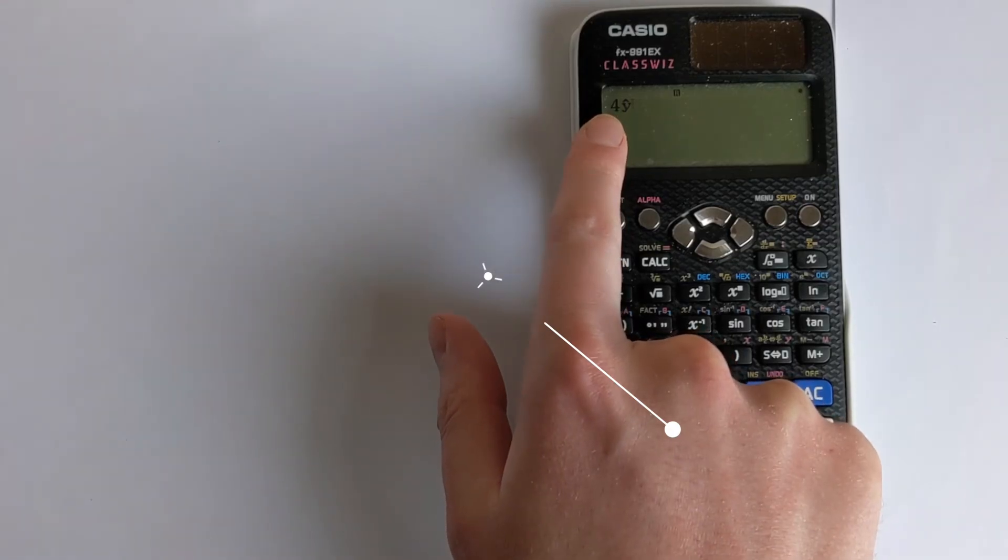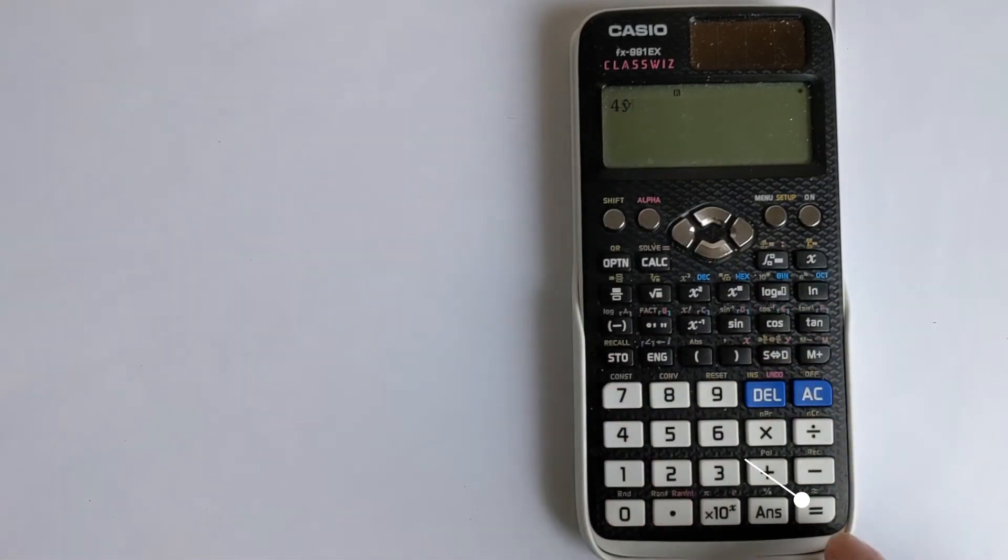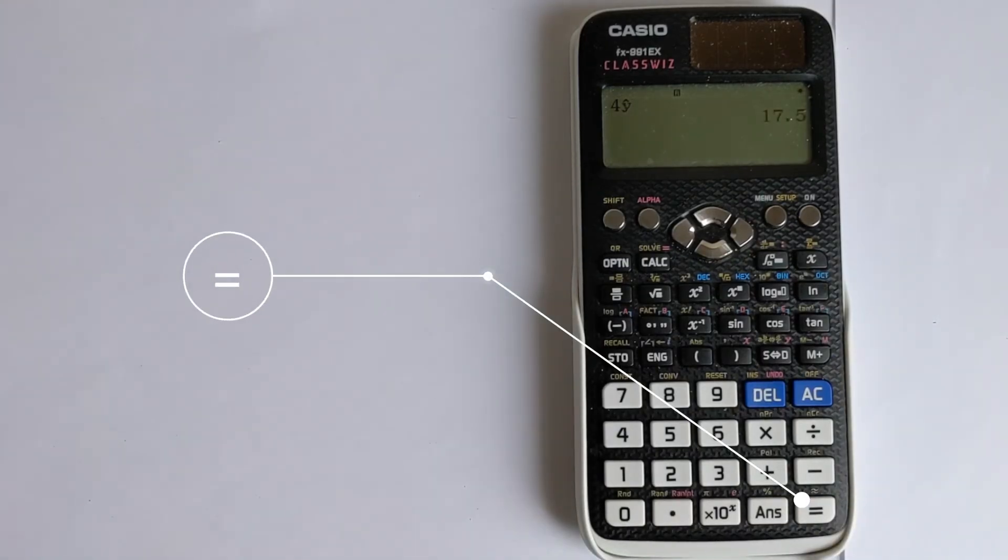So we've got 4 as the point we're interested in finding out, and then we're evaluating it to find y, which corresponds to temperature. So we press equals, and that gives us 17.5, which is the right answer.